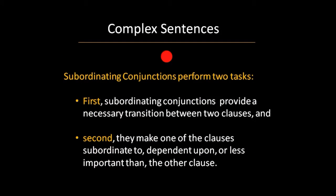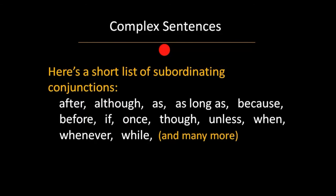Subordinating conjunctions perform two tasks. First, subordinating conjunctions provide a necessary transition between two clauses, and second, they make one of the clauses subordinate to, dependent upon, or less important than the other clause. Here's a short list of subordinating conjunctions. There are many more.